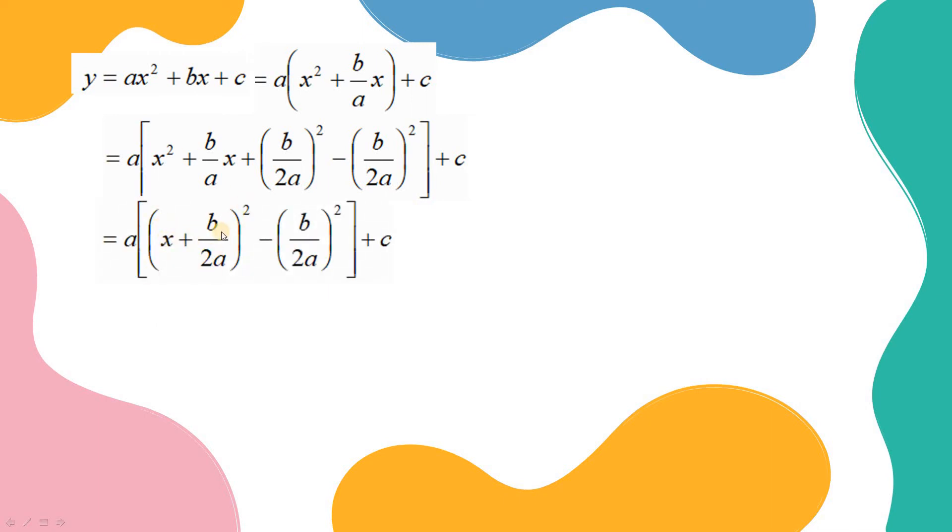Yes, very good. And b over 2a squared minus b over 2a all square keep here. And the next step is multiply a into this term and also this term. Keep this term.